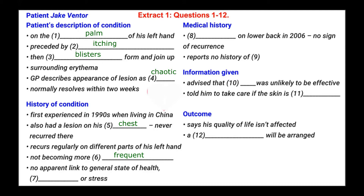The next question is: no apparent link to general state of health, blank, or stress. We pay attention to when the patient talks about his health or stress and listen for the third word. The patient says it doesn't seem linked to anything in his daily life — not when he's run down, not because of anything in his diet, and not due to pressure at work. So the answer to number seven is: no apparent link to general state of health, diet, or stress.